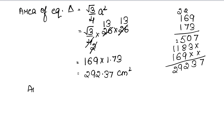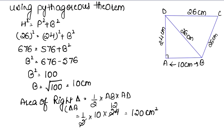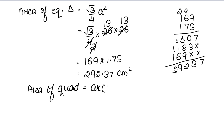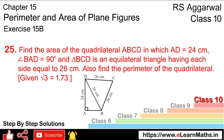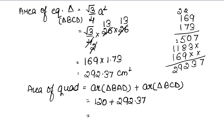Now, the area of quadrilateral ABCD equals area of right triangle BAD plus area of equilateral triangle BCD. So this is 120 cm² plus 292.37 cm², which gives us 412.37 cm² as the total area of quadrilateral ABCD.